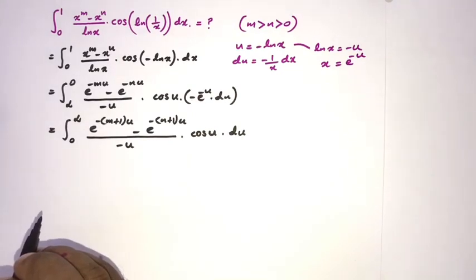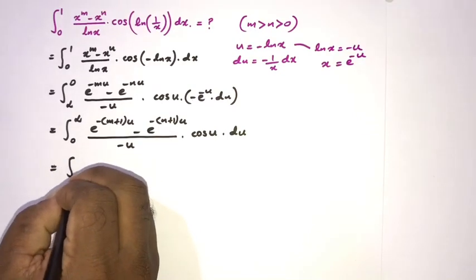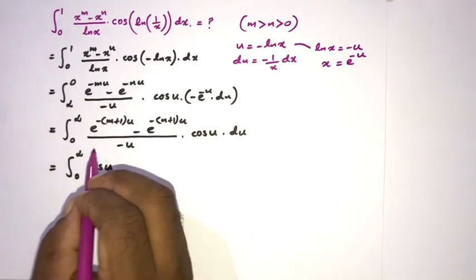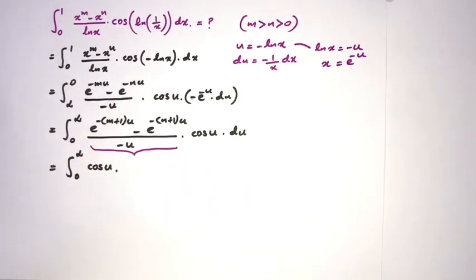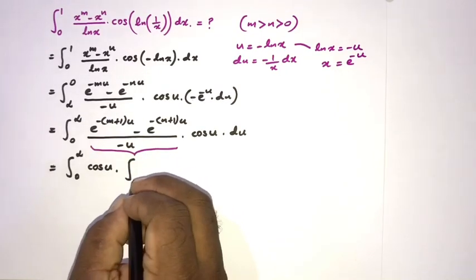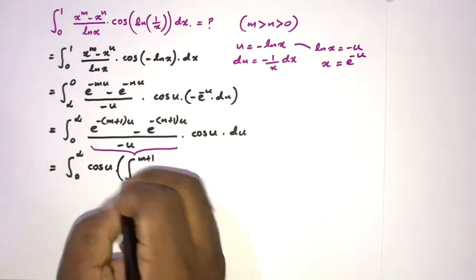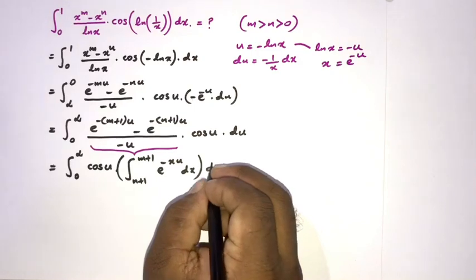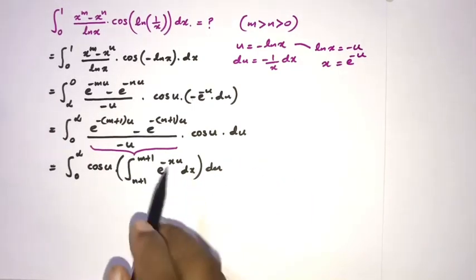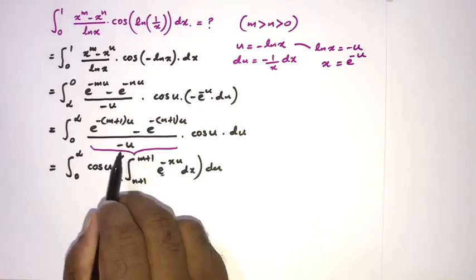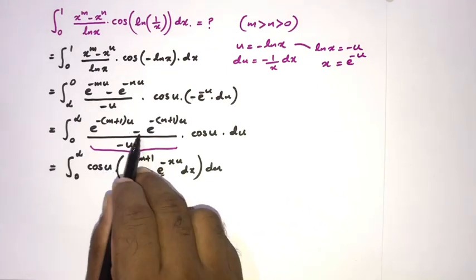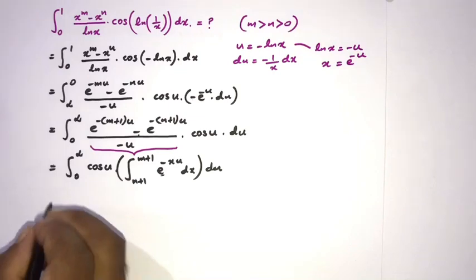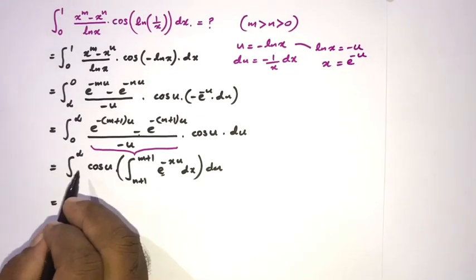Now we rewrite the numerator as an integral: the expression e to the minus (m+1)u minus e to the minus (n+1)u over u can be expressed by integrating e to the minus xu with respect to x from n+1 to m+1, since integrating gives exactly that difference divided by u.